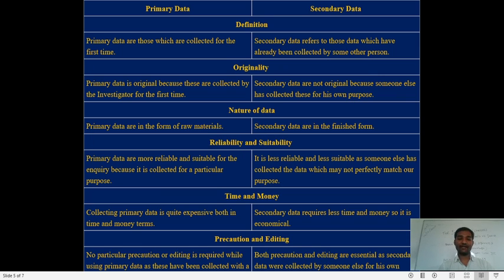Regarding precaution and editing: no particular precaution or editing is required while using primary data. For secondary data, both precaution and editing are essential because it was collected by someone else. Secondary data is easy to edit since it is raw data to which we can add information, so secondary data is editable.